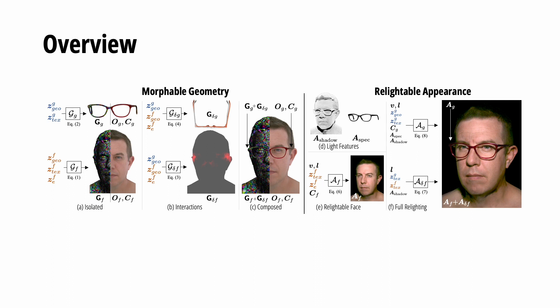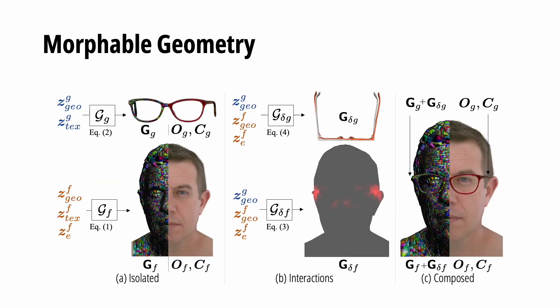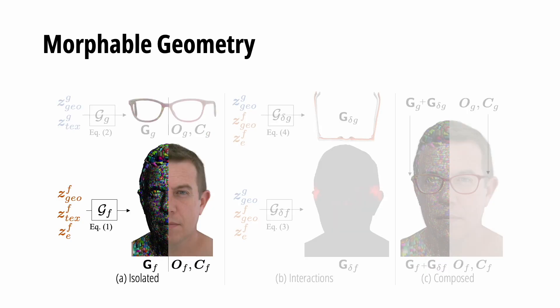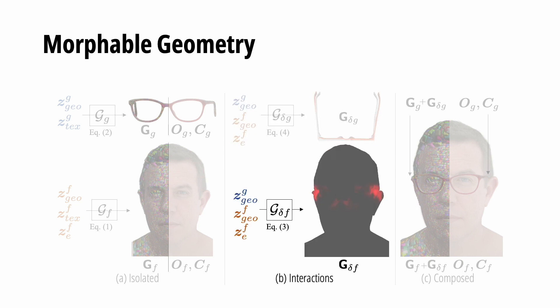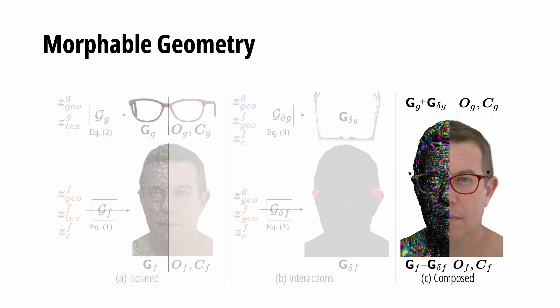This is the overview of our method. It has two major components: morphable geometry and relightable appearance. First, we learn the morphable geometry of the face and eyeglasses model. The primary focus of this step is to learn good geometry and motion of eyeglasses conditioned by facial expressions. The morphable geometry has four networks: the eyeglasses geometry decoder, the face geometry decoder, the eyeglasses deformation decoder, and the face deformation decoder. We compose these four components together to get our face and eyeglasses geometry modeling.